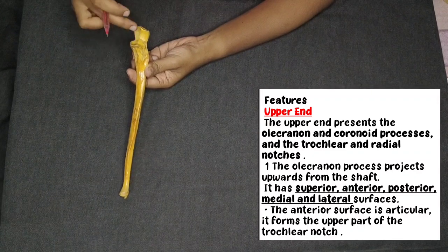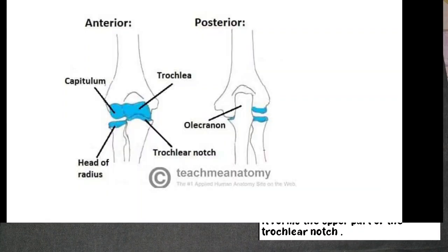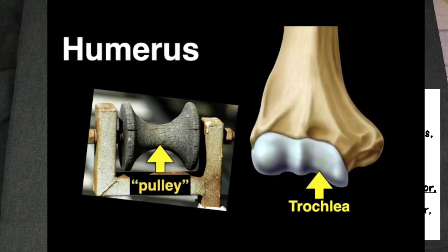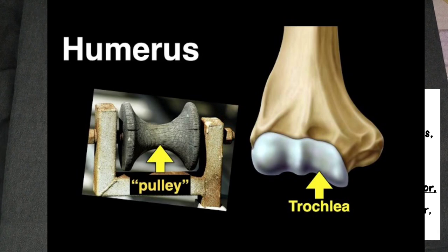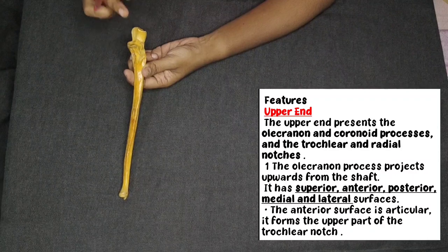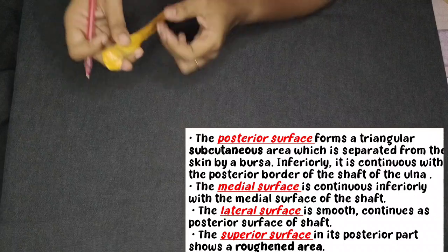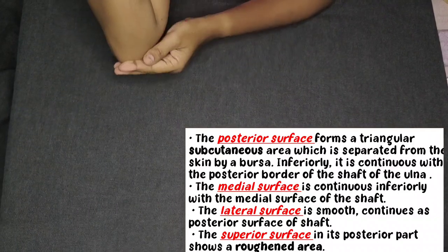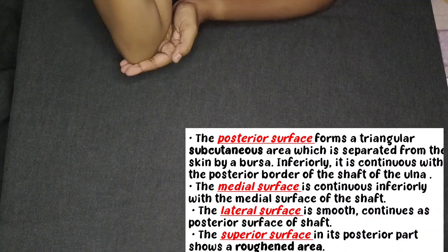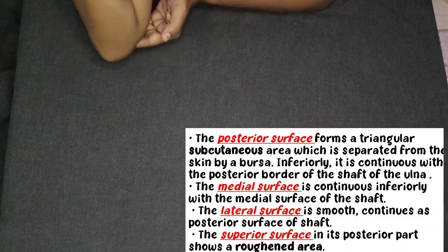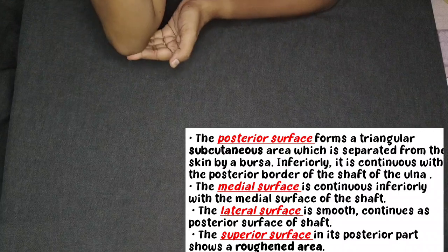The trochlear notch articulates with the trochlea of the humerus. The lower end of the humerus has the trochlear structure. So the trochlea is attached to the trochlear notch. That is all about the anterior surface. Coming to the posterior surface — the posterior surface is subcutaneous. That is why we can feel it. Subcutaneous means below the skin — we can feel it easily.